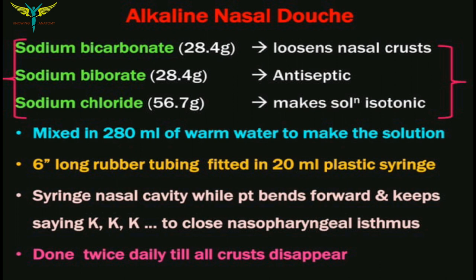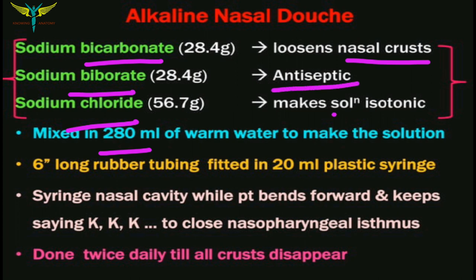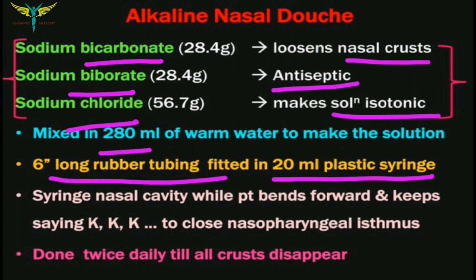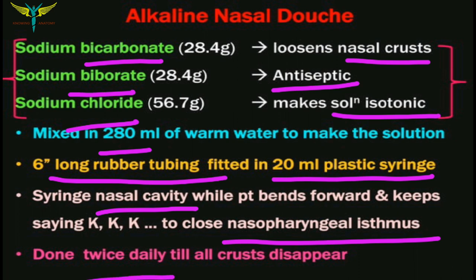The alkaline nasal douche uses a combination of three solutions: sodium bicarbonate, sodium biborate, and sodium chloride, mixed in 280 ml of warm water. Sodium bicarbonate loosens the nasal crusts, sodium biborate acts as an antiseptic, and sodium chloride makes the solution isotonic. The mixed solution is transferred into a six-inch long rubber tube fitted to a 20 ml plastic syringe, introduced into the nasal cavity while the patient bends forward and says 'k' to close the nasopharyngeal isthmus. It is done twice daily until disappearance of crusts.